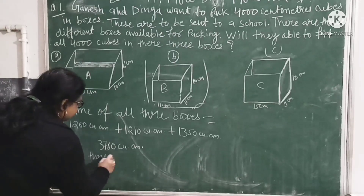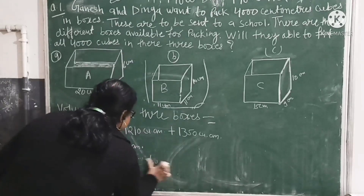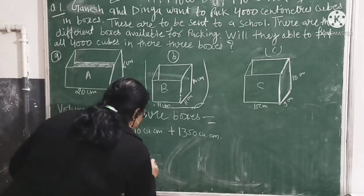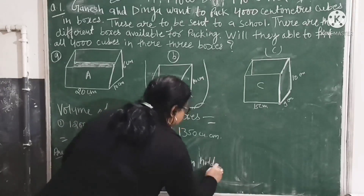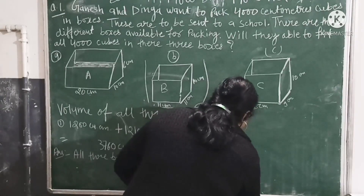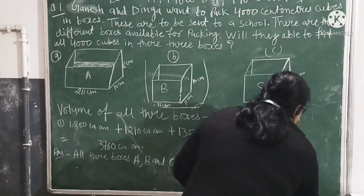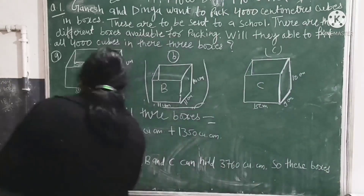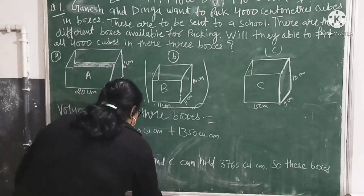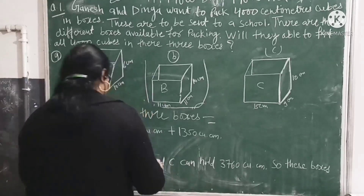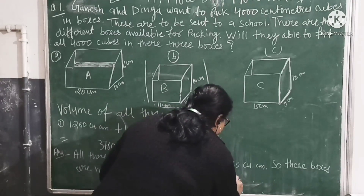All three boxes — A, B, and C — can hold 3760 cm³. So these boxes are not able to pack all 4000 cm³ cubes.